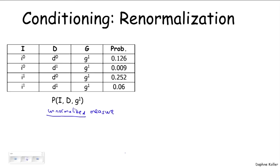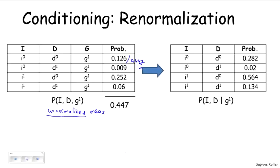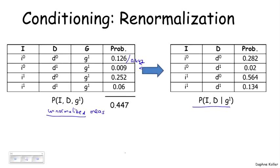If we want to turn it into a probability distribution, the obvious thing to do is to normalize it. So what we're going to do is take all of these entries, sum them up, and that's going to give us a number, which in this case is 0.447. And we can now divide each of these by 0.447. And that's going to give us a normalized distribution, which in this case corresponds to the probability of I, D, given G1. So that's a way of taking an unnormalized measure and turning it into a normalized probability distribution. We'll see that this operation is one of the more important ones that we're using throughout the course.